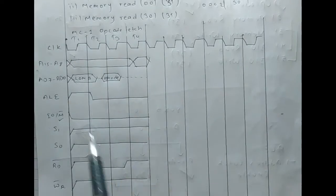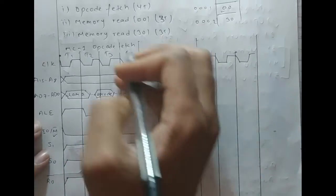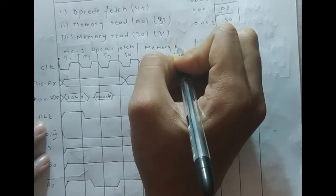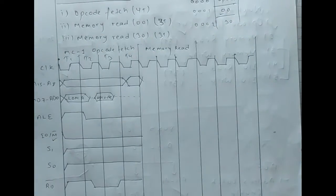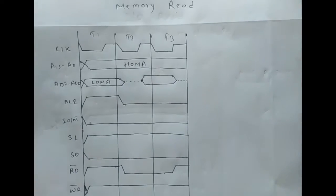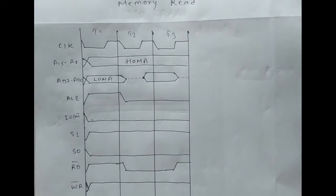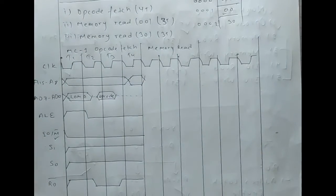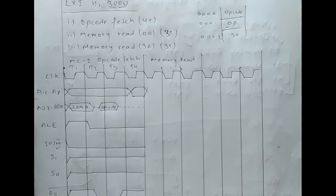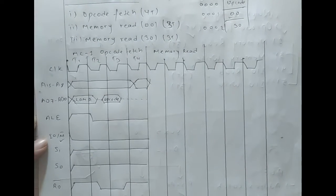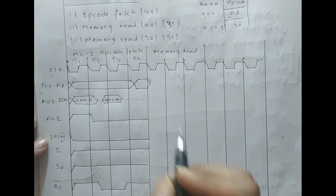The second machine cycle is memory read. This is the timing diagram for the memory read. If you haven't watched my previous video, please don't forget to watch it — it will help you draw the timing diagram for the instruction, because I have taught there how to draw the timing diagram for the machine cycle.